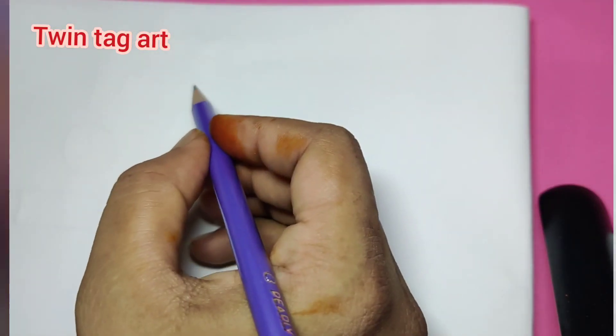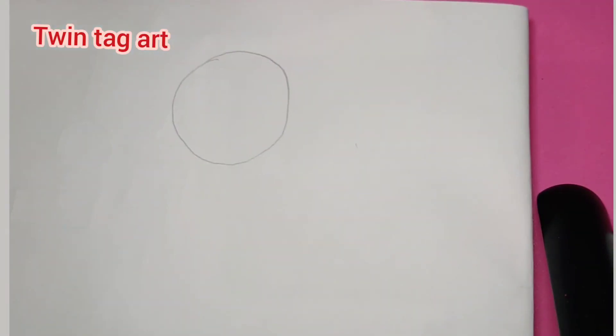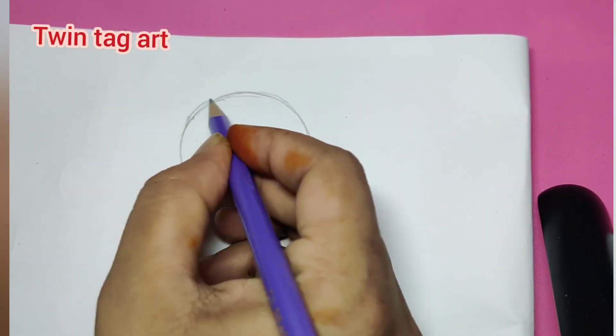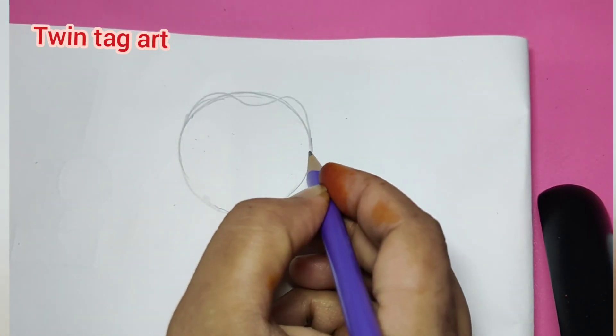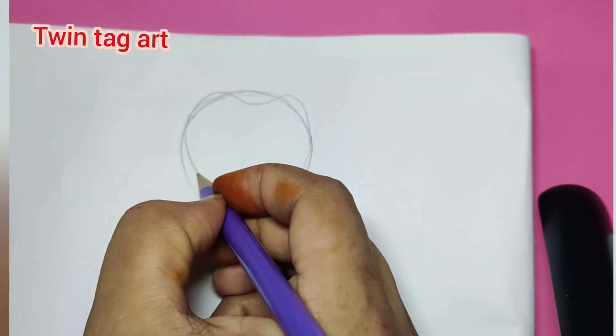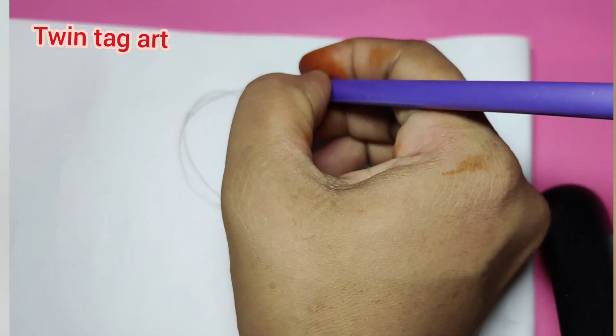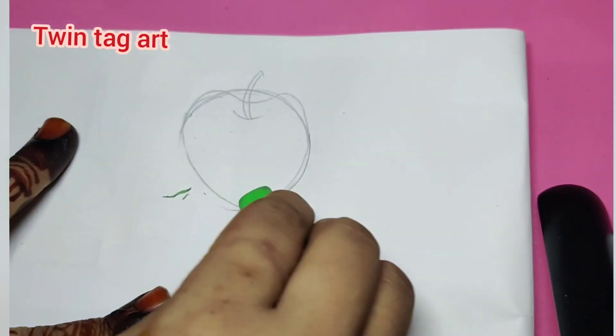As you know, every object has shapes. So let's draw an apple using a circle shape. Every object has a particular shape, so the first task is to identify that shape, and then we have to draw it. Like apple is almost a circular shape.